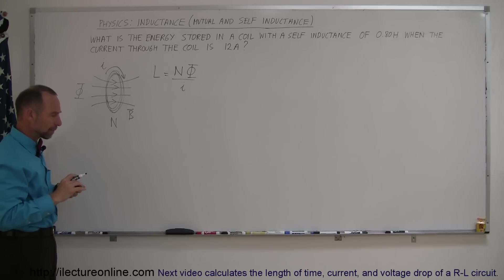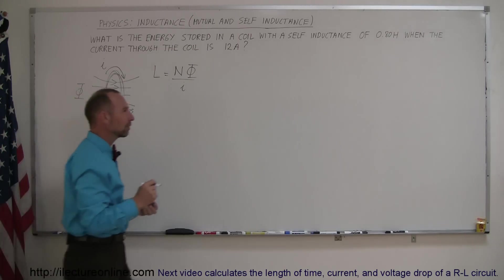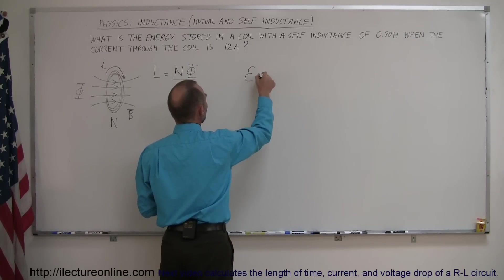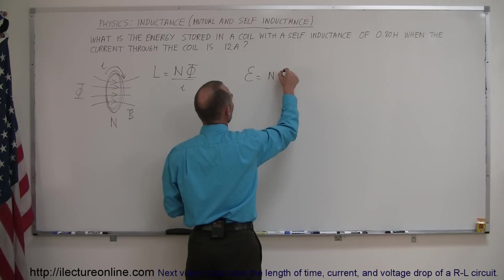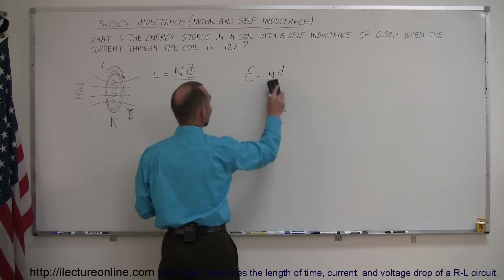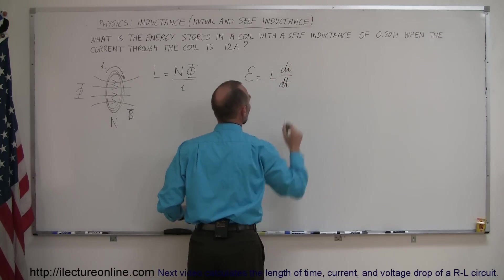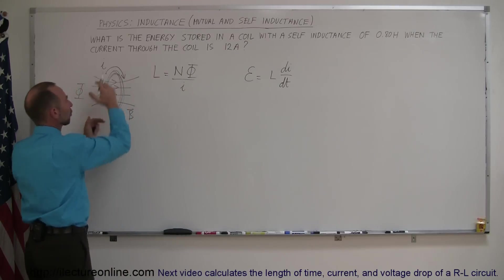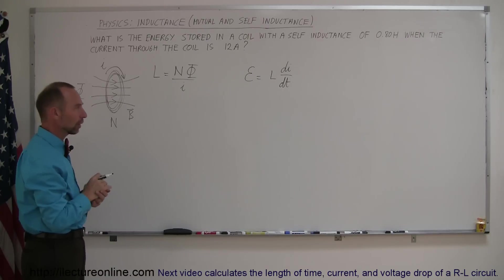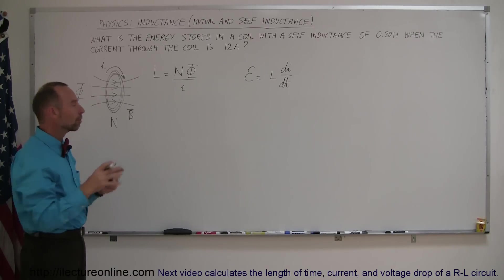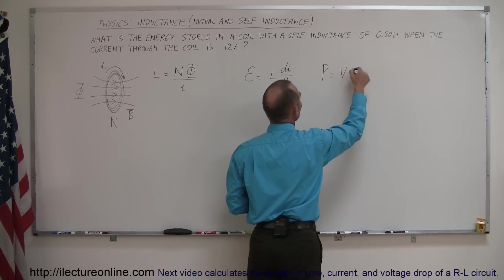Let's think about it this way. If the current changes through the coil, then we produce an EMF. The EMF induced in the inductor is equal to the self-inductance times the change in the current over time. So we can say that the voltage across the coil at any point in time is equal to the self-inductance times the change of the current through the coil.